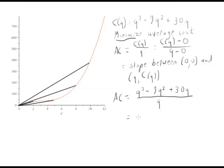And when we divide everything through by Q, we're going to get q squared minus 9q plus 30. That is the average cost function. It's what we get when we divide cost by Q.